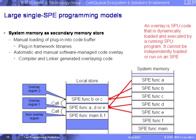We hide all the details of DMAs and the complexity involved. On the large single SPE programming model, we have a code segment, a data segment, and we know the size of the programs. When we sum up the sizes of all segments, the total may exceed 256 KB. Can we break up those sizes?